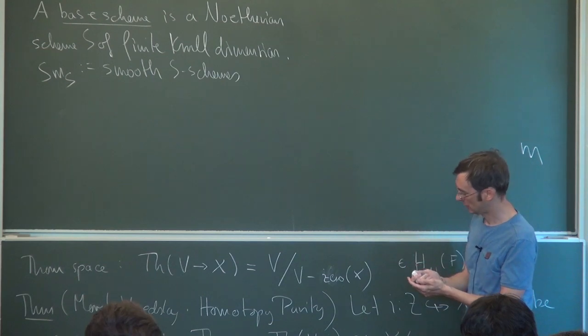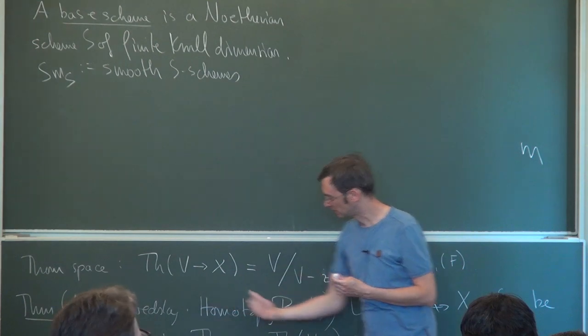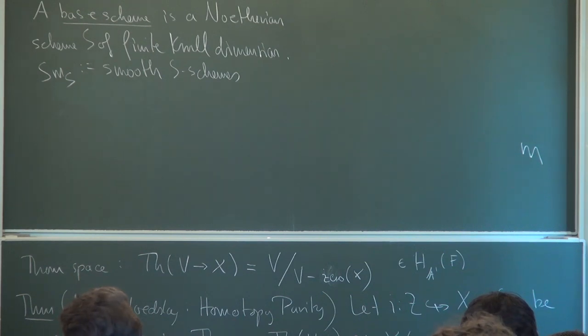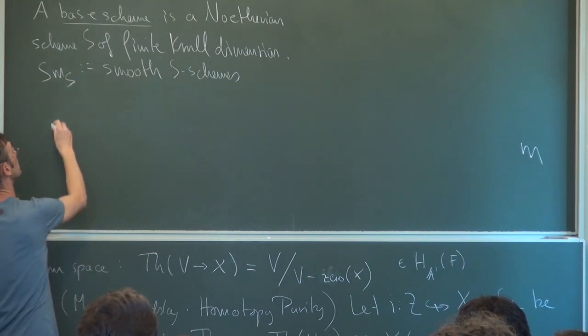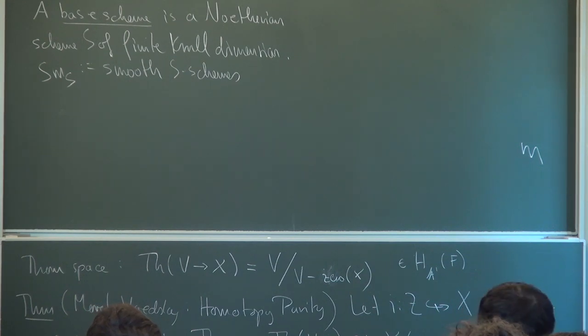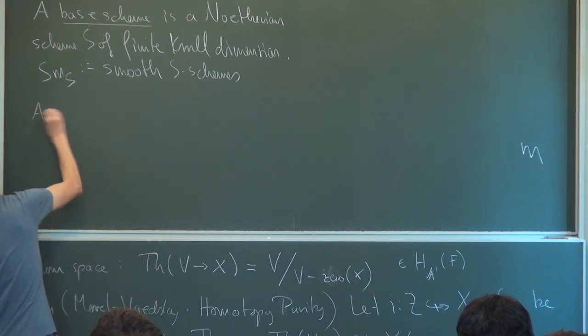So the aim is to do a homotopy theory which allows us to make sense of something like the Thom space, something like a suspension spectrum, suspensions in general. In order to do this, we need to enlarge this category and pay some attention to the enlargement. From the view towards homotopy theory, it's convenient to do this enlargement simplicially.